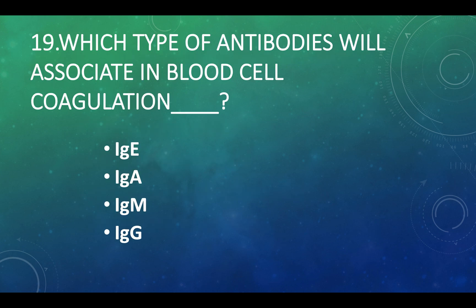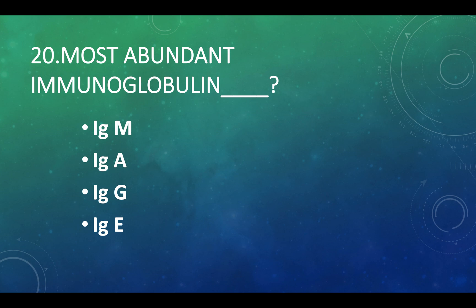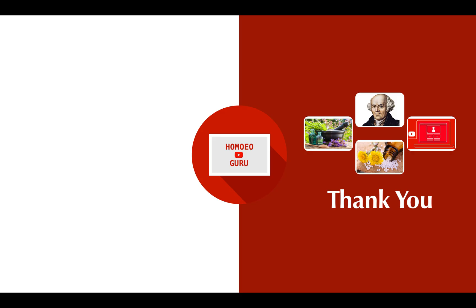Which type of antibody is associated with blood cell agglutination? Option A — Immunoglobulin E, Option B — Immunoglobulin A, Option C — Immunoglobulin M, Option D — Immunoglobulin G. Thank you.